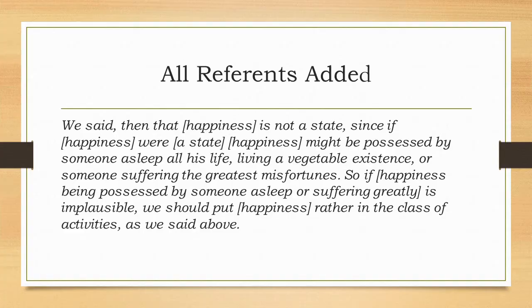We face a problem now. What does the word 'this' refer to in the final sentence? The answer is, it refers to the previous claim that happiness might be possessed by someone who was asleep all his life, or who was suffering great misfortune. Filling this in, we get this version of the argument: 'We said, then, that happiness is not a state, since if happiness were a state, happiness might be possessed by someone asleep all his life, living a vegetable existence, or someone suffering the greatest misfortunes. So if happiness being possessed by someone asleep or suffering greatly is implausible, we should put happiness rather in the class of activities, as we said above.'